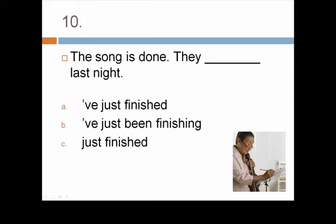The best answer choice is C. Look, they're playing again today. Let's go listen for a little bit. The best choice is the present progressive because we're referring to an action that is taking place right now, at this moment. The best answer choice for the next item is A. Have they finished that song yet? I heard them working on it last week. We do not need a progressive tense here because we need to emphasize the completion of an action, not an action in progress. The present perfect refers to an action that took place in the past but not at a specific point. The best answer choice is C. The song is done. They just finished last night. The simple past works best because we're naming a specific point in time.